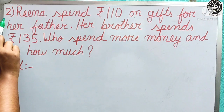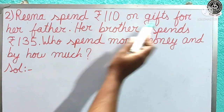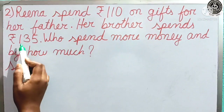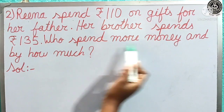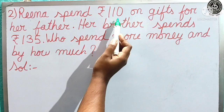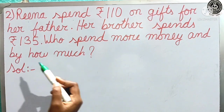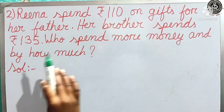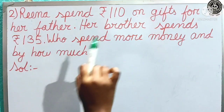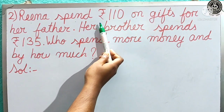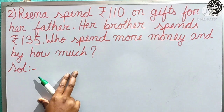Here is your number 2 question. Reena spent 110 rupees on a gift for her father. Her brother spent 135 rupees. Who spent more money and by how much? Reena spent 110 rupees and her brother spent 135 rupees. To find out who spent more money and by how much, we have to do the subtraction. This word problem is based on money, as we are solving a rupee word problem.